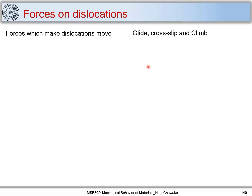In the last part, we have seen how to quantify a plastic strain when a dislocation moves. However, we need to find out what are the forces acting on a dislocation — what causes this movement of dislocation such as climb, glide, or cross slip. So let's figure out what these forces are.